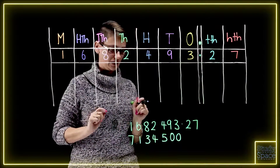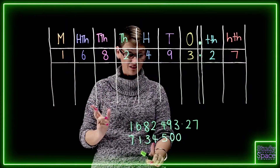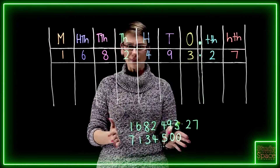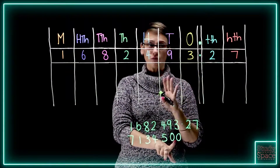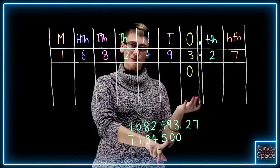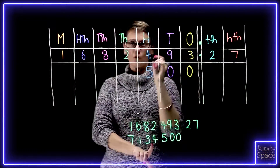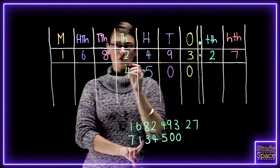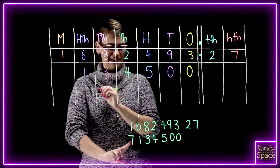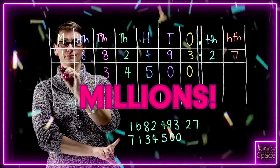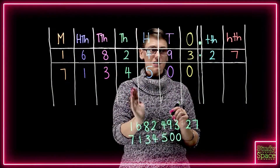Let's have a look at our last one: seven million, one hundred and thirty-four thousand and five hundred. It's a whole number, so no decimal places. Starting from the ones column — I've got none, but I put zero in to hold the place value. Also zero in the tens to hold the place value. Then five hundred in the hundreds column. Four for the thousands column, three for the tens of thousands, one for the hundreds of thousands, and seven for the millions column. Seven million, one hundred and thirty-four thousand and five hundred.